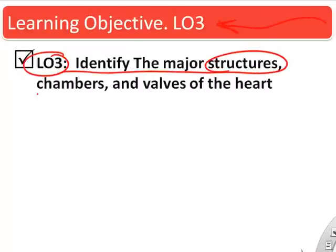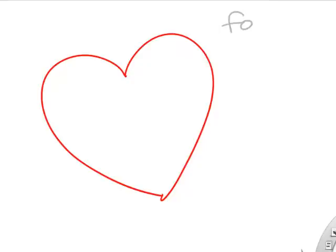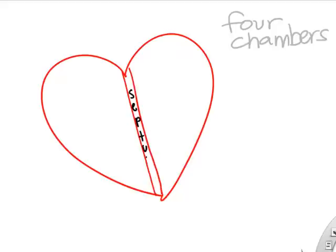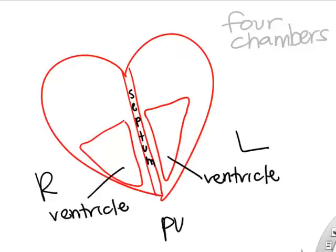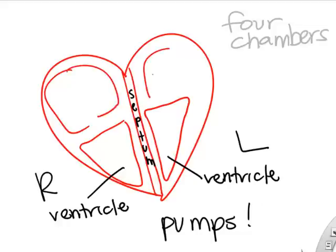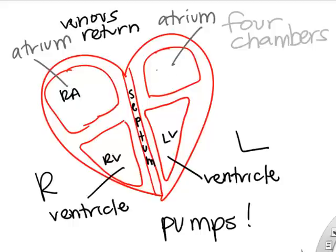Next, we identify the major structures, chambers, and valves. The heart has four chambers and a septum dividing right and left. The bottom pumping chambers are called ventricles — these are the real pumps. The top filling or receiving chambers are called atria. Venous return occurs in the atria. We have a right atrium, right ventricle, left atrium, and left ventricle.